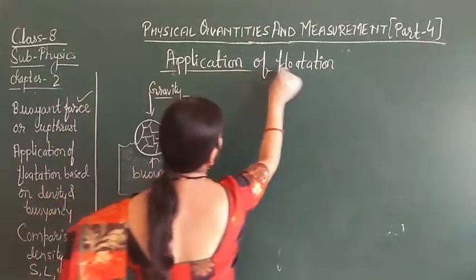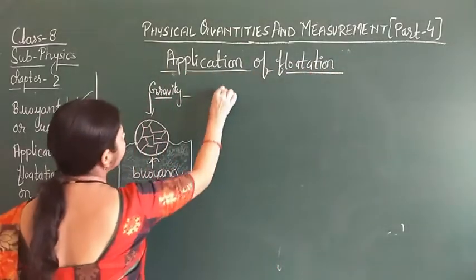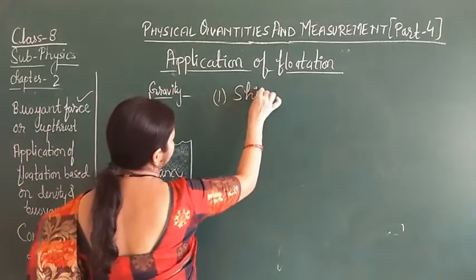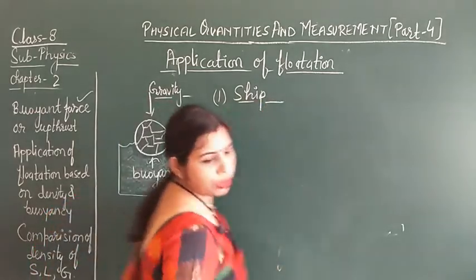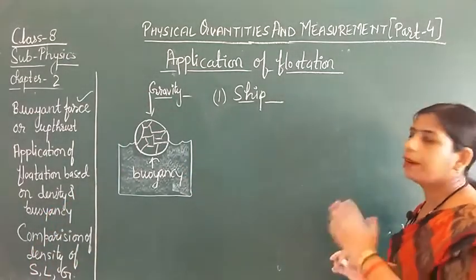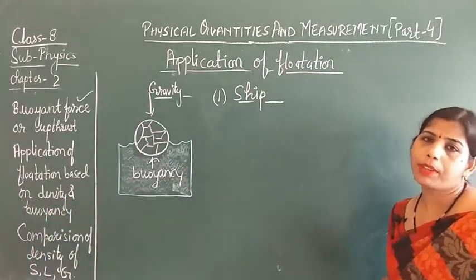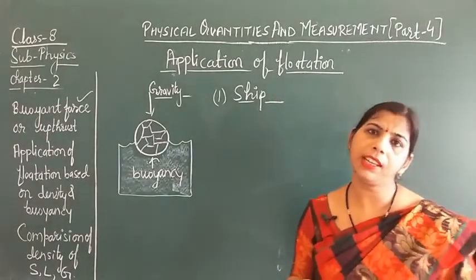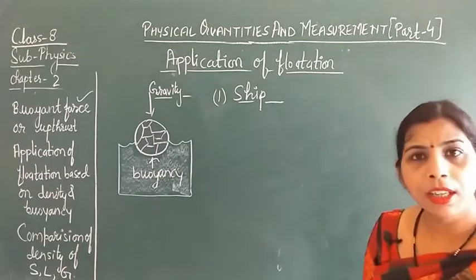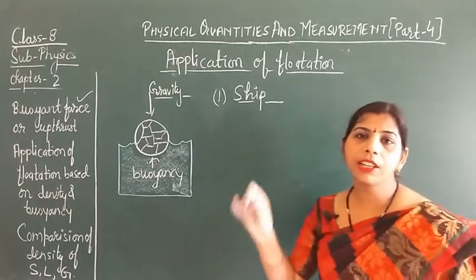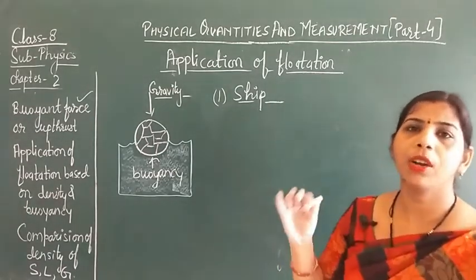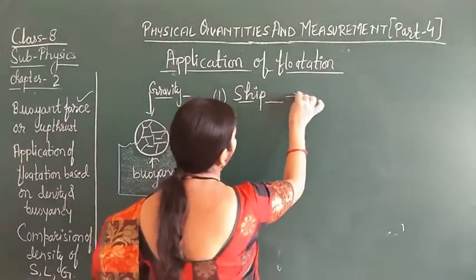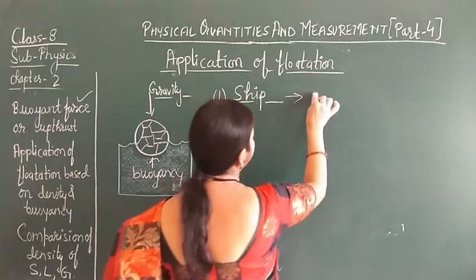For the application of flotation, let's discuss two examples. First, we will discuss about the example of a ship. Whenever you observe, if you put one iron nail in the water, that iron nail sinks. But when you observe a ship, the ship sails and floats on the water. Why does this happen?